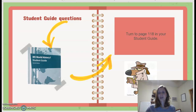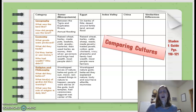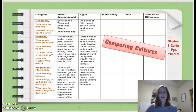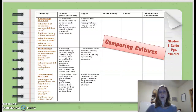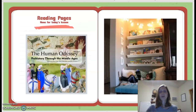Turn to page 118 in your student guide. You will need to pause this video. There is a chart here on comparing cultures — we've got Sumer and Egypt, and we'll fill in the Indus Valley and China as we go. Definitely take time to fill in this chart; it will help you organize your thoughts once we finish this semester. The chart has three parts — go ahead and pause the video on each slide to fill it in. This is basically a quick overview and review. There are no reading pages for today, so you have plenty of time to fill in that chart.